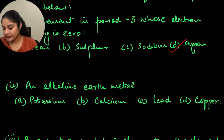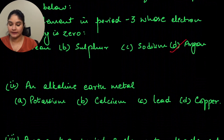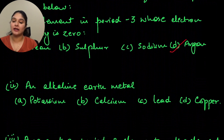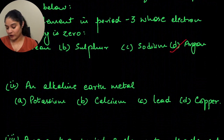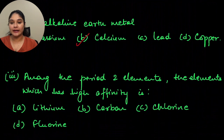The next question asks to identify an alkali earth metal from the options: potassium, calcium, lead, copper. You need to understand which ones are alkali earth metals and have a clear understanding of the periodic table — the number of periods, groups, and the elements lying within them. For this particular question, your answer would be B, that is calcium.